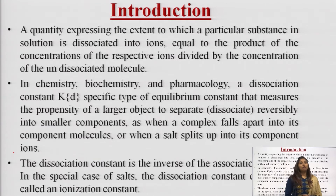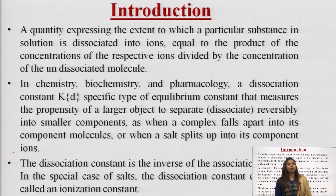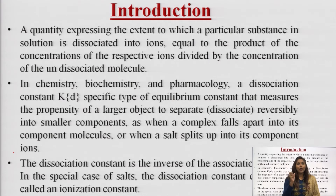In chemistry, biochemistry, and pharmacology, a dissociation constant K is a specific type of equilibrium constant that measures the propensity of a larger object to separate — to dissociate reversibly into small components — as when a complex falls apart into its component molecules, or when a salt splits into its component ions. So dissociation equals dissociation constant K, which is the separation of larger objects into smaller molecules or smaller ions.